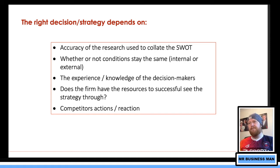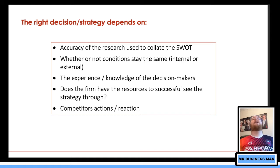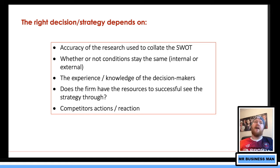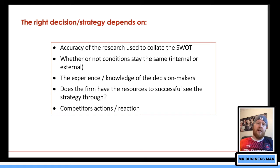The right decision depends on the accuracy of the research used to collect the SWOT data. Conditions can change — internal and especially external. Who would have thought the lockdown would happen? There's no way we could know all the possibilities of future change, and we can't make contingencies for every situation. A lot depends on the experience and knowledge of the decision makers — what they've lived through, what they've seen in other companies.